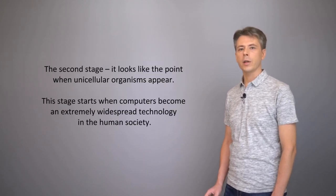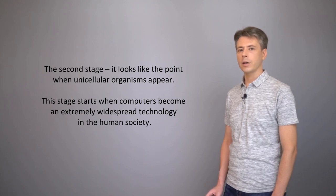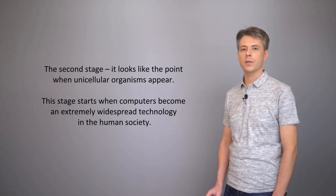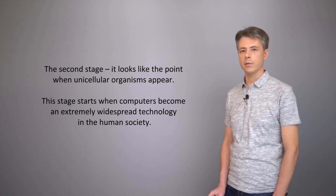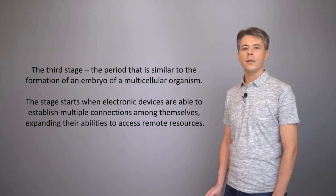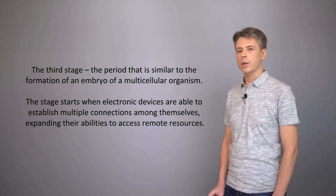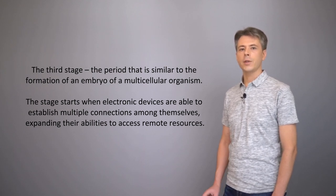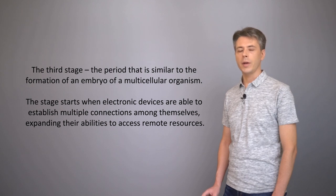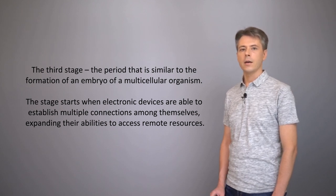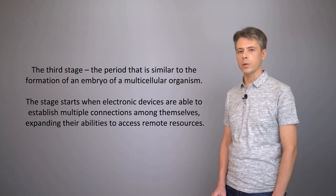The second stage looks like the point when unicellular organisms appear. This stage starts when computers become an extremely widespread technology in human society. The third stage is the period similar to the formation of an embryo of a multicellular organism. The stage starts when electronic devices are able to establish multiple connections among themselves, expanding their abilities to access remote resources.